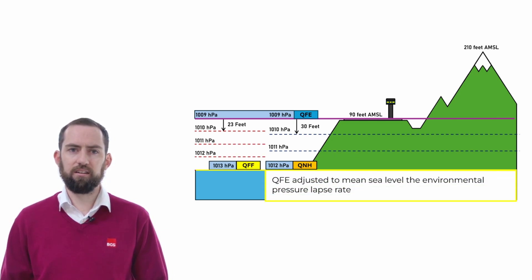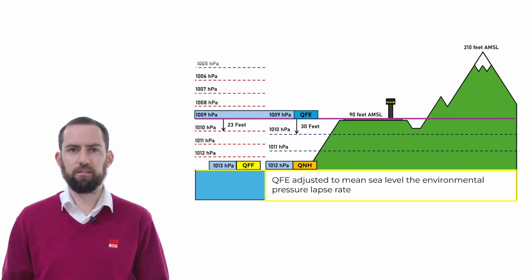This brings me on to explaining that the QFF is the QFE adjusted down to mean sea level using the environmental pressure lapse rate. So instead of using the standard rates, the meteorologist will take measurements to determine how the pressure is actually reducing with height. In this case, I have used figures of 23 feet per hectopascal. For good measure, let's fill in the rest of our atmosphere.